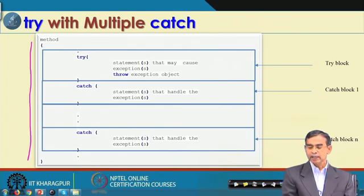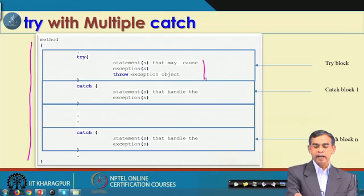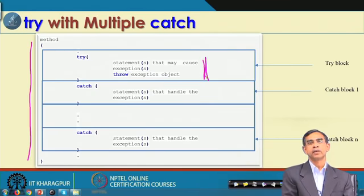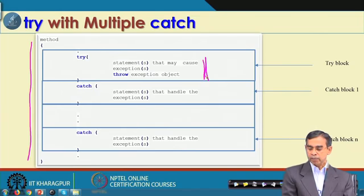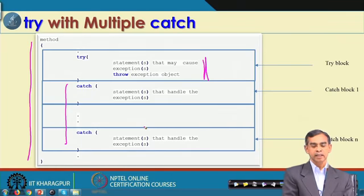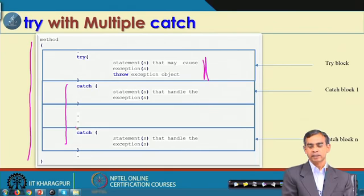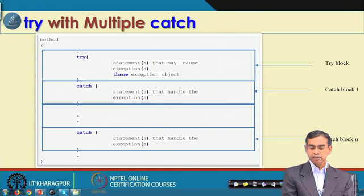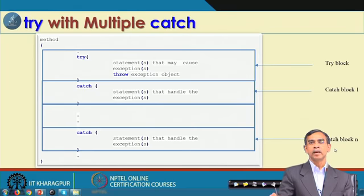In the try block, it will detect whatever exception occurs. The try block is responsible for catching all the exceptions, and for each exception we have to maintain a corresponding catch block so that each catch block will handle its corresponding exception. Try with multiple catch indicates that if there are multiple errors or exceptions in a program, they can be handled with one try block and multiple catch blocks.